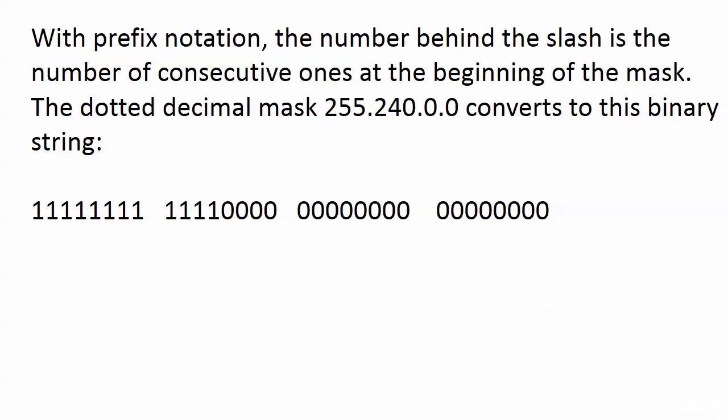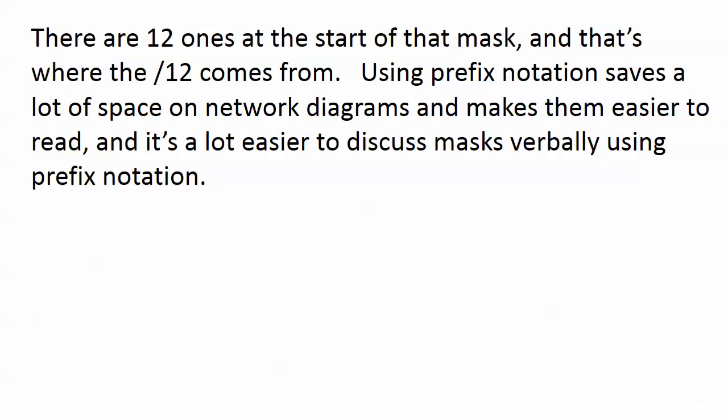Let me show you exactly how we arrive at that. With prefix notation, the number behind the slash is the number of consecutive ones at the beginning of the mask. That's all it is. The dotted decimal 255.240.0.0 converts to this binary string. You can see it's 12 ones at the beginning and then everything else is a zero. That's where the slash 12 comes in.